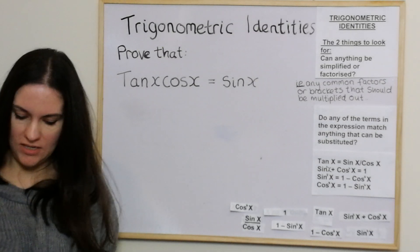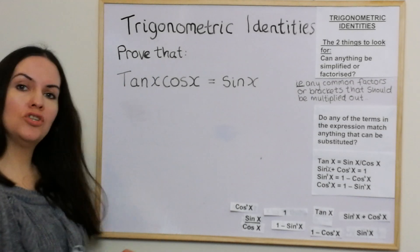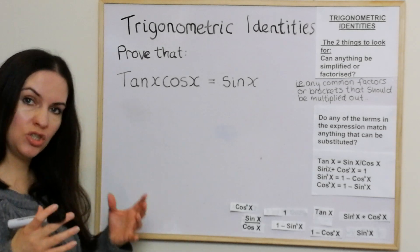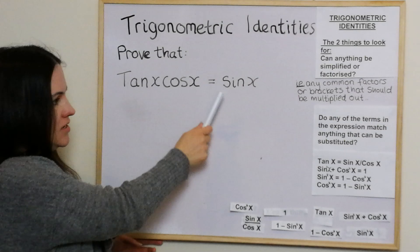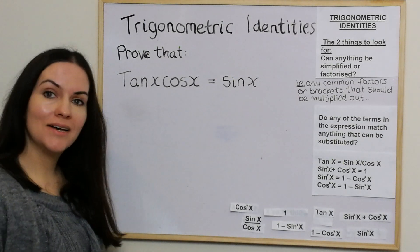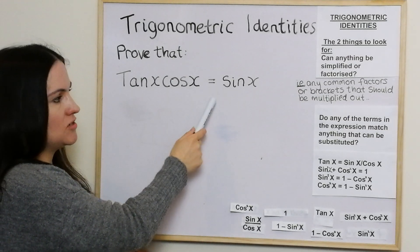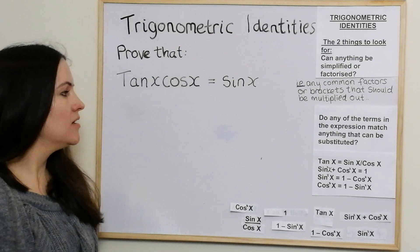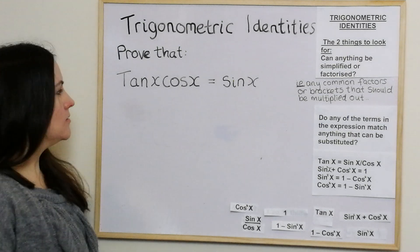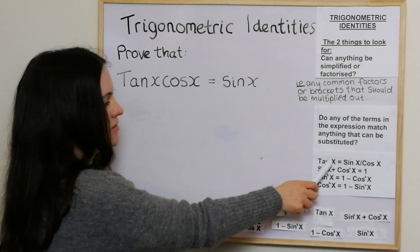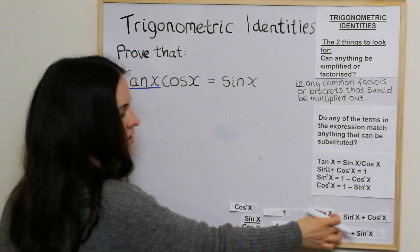I'm going to start with a relatively easy example. Usually these questions will say 'prove that' or 'show that'. So let's prove that tan x · cos x = sin x. First of all, can anything be simplified or factorised? I don't think so — there aren't any common factors or brackets. Do any of the terms match anything that can be substituted? Well, tan x is something that can be substituted, and there is tan x in the expression.